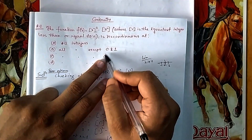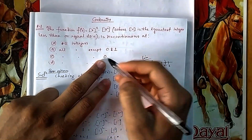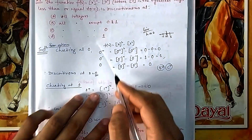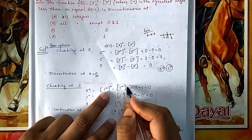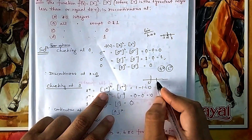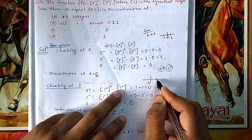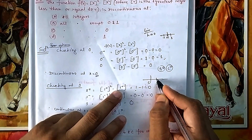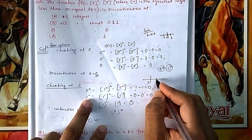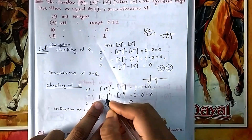The options saying 'discontinuous at all integers except 0' and 'continuous at 0' are eliminated — options B and C are gone. Now check at x = 1: for RHL (1+), [1.001]² = 1² = 1, and [1.001²] = [1.002001] = 1. So RHL of [x]² − [x²] = 1 − 1 = 0. For LHL (1−), 0.99999 floors to 0, so [x] = 0.